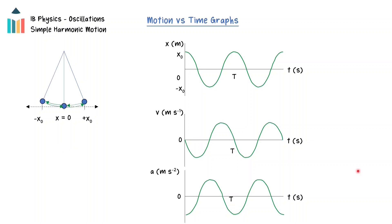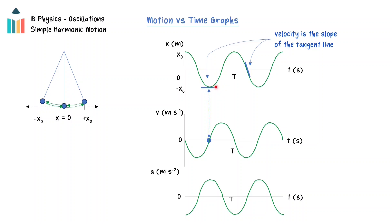The velocity time graph can be determined from the displacement time graph. Recall that the velocity of the object can be found by taking the slope of the displacement time graph. Because the displacement time graph is non-linear, the slope of the tangent line will be the instantaneous velocity of the mass. When the mass is at a maximum displacement, the slope of the tangent line is zero meters per second, so the velocity as a function of time graph will feature that point. At the equilibrium point, the slope of the tangent line is a maximum value, indicating that the velocity is a maximum when the object passes through the equilibrium point.